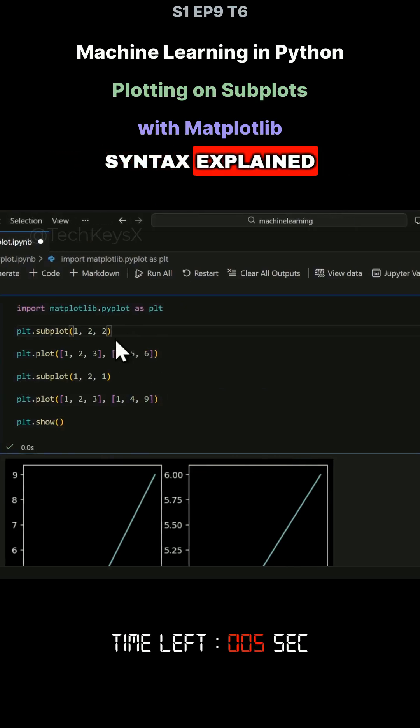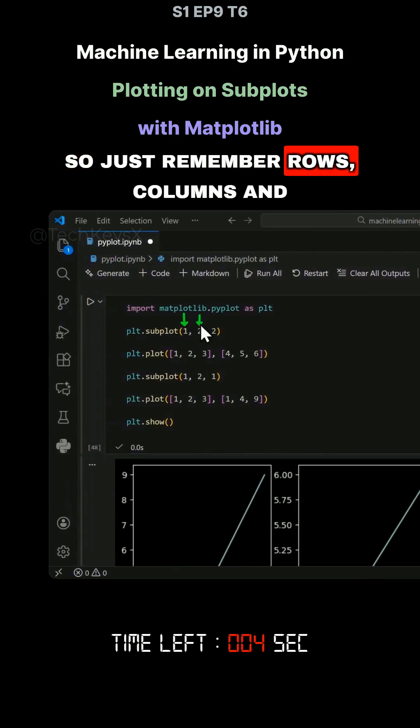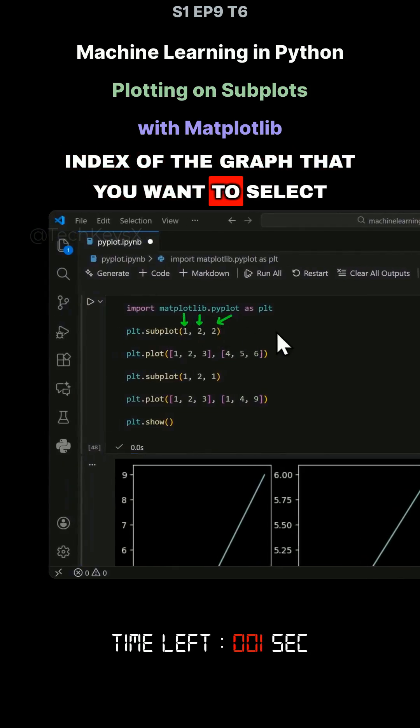So this is the strange looking syntax explained. So just remember rows, columns, and index of the graph that you want to select.